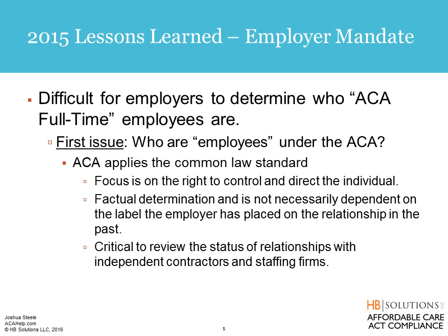When you look through the 15-factor test — available on the IRS website — you might say, all right, we've got 11 factors leaning toward independent contractor and only four toward employee, so we feel comfortable this person is indeed an independent contractor. Unfortunately, it's not like that when the IRS looks at it. The IRS can literally say: I know you've got 14 factors leaning toward independent contractor and only one toward employee, but in this particular situation we think this one's more important — it's dispositive — so we're going to say employee. It's important to review the status of relationships with independent contractors and staffing firms to ensure you're not miscounting people, which can mess up your employer mandate compliance.